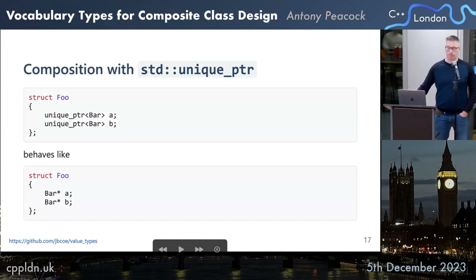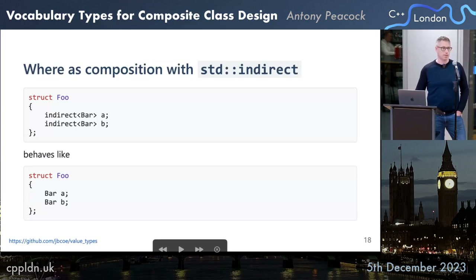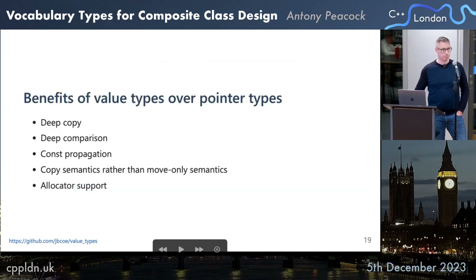If we create a type foo with two unique_ptr<bar> members, it behaves like a struct containing two pointers. Whereas if you use indirect, you get a type that models a struct containing two values of type bar. With indirect<bar> members a and b, you get copying working correctly, deep comparison, the comparison operator which gives equality so it meets the regular requirements, const propagation, copy semantics rather than move-only semantics, and allocator support.